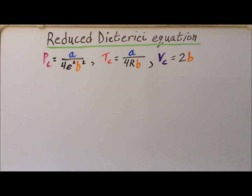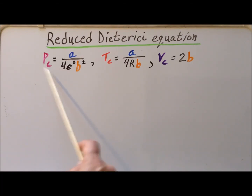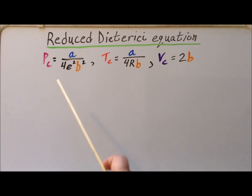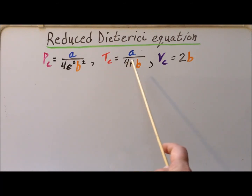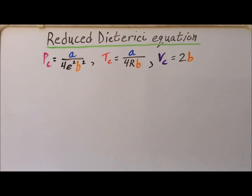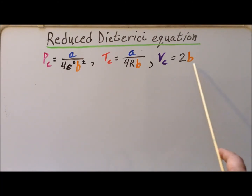First, we list the critical constants for the Dieterici equation. The critical pressure, P sub C, is A divided by 4e² B². The critical temperature, Tc, is equal to A divided by 4RB. And the critical volume, V sub C, is equal to 2B.